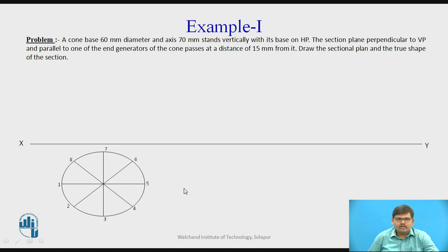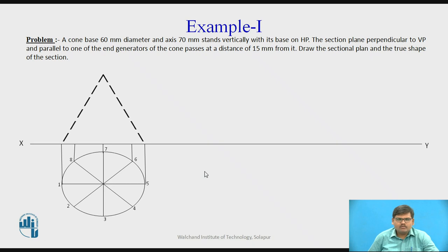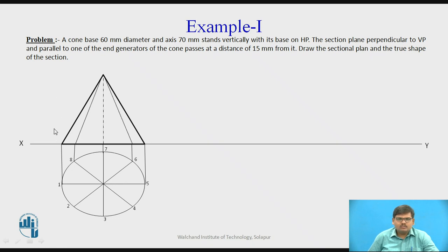Let us move further for drawing the front view. We will project each and every point into the front view. Point 1 is projected vertically upwards. Points 2 and 8 are on the same line; points 3 and 7 on the same line; points 4 and 6 on the same line; and point 5 in the vertically upward direction. This forms the base of the cone in the front view. The cone has a height of 70 mm in the front view. Now let us join the generators and name them: 1 as 1-dash, similarly 2-dash, 3-dash, 4-dash, and so on.